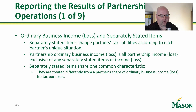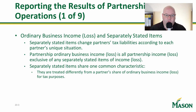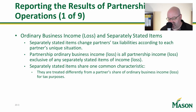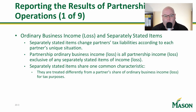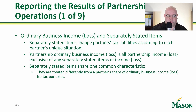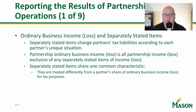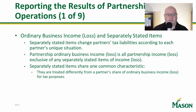So ordinary business losses — if you think about it, anything that goes on a Schedule C is generally going to go in ordinary business income and losses. Go ahead and download Schedule K-1 for Form 1065 to follow along. Ordinary business income and loss goes into box one. Separately stated items go in everything from box two all the way down to box 20.